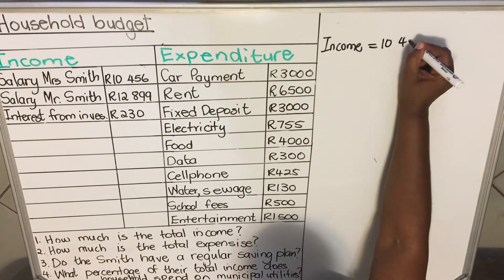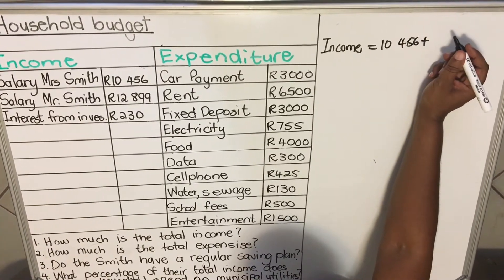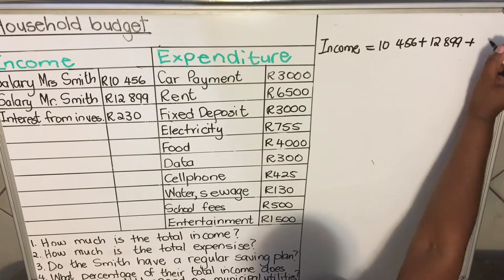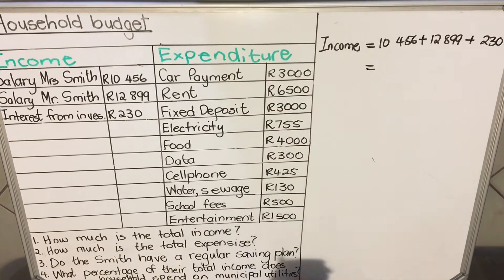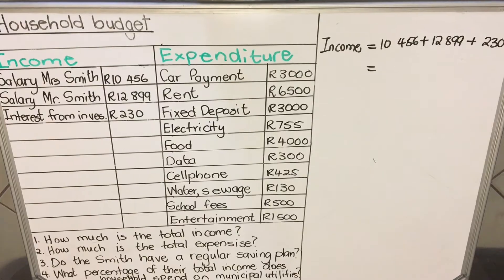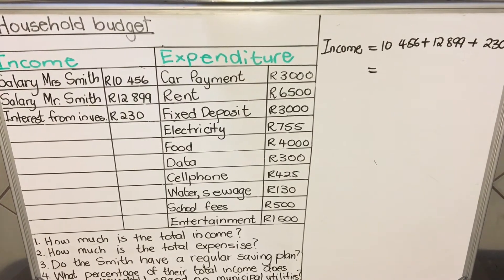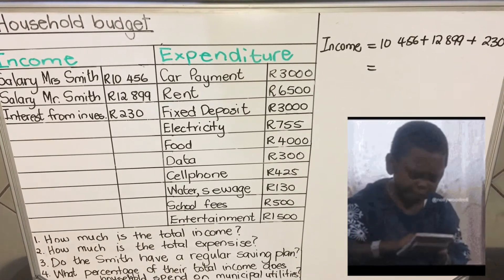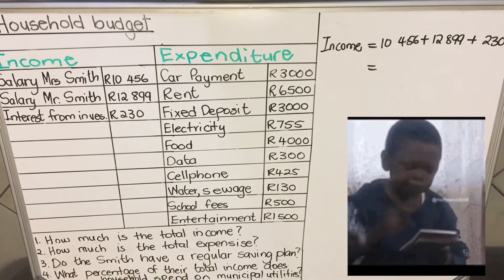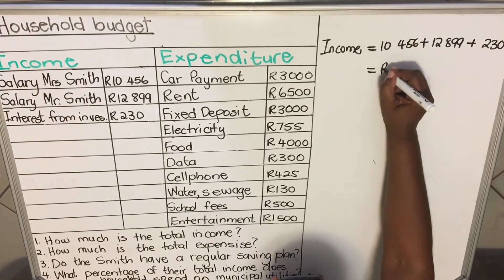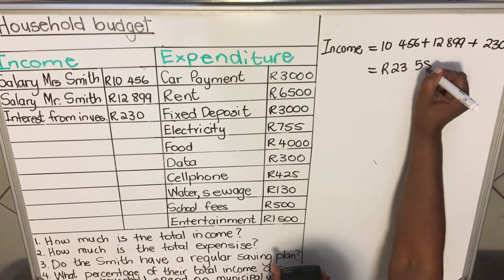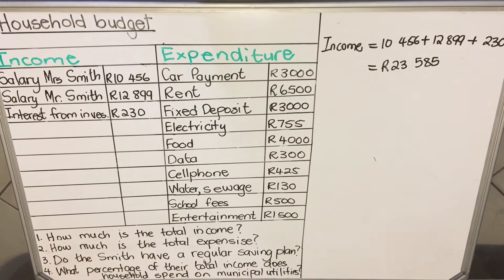The salary for Mr. Smith is 10,456, the salary for Mrs. Smith is 12,899, and then plus 230. Sometimes you might have income from commission or things like that — money coming into the family is the income. So 10,456 plus 12,899 plus 230 gives us a total income of 23,585.